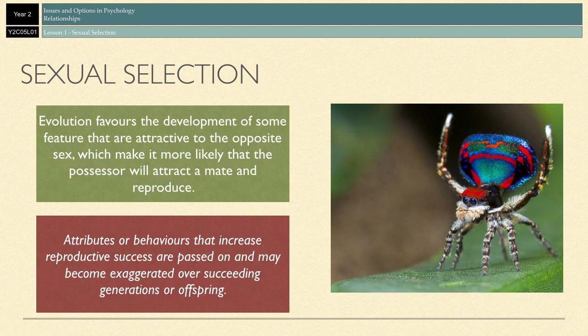As an example using humans — if height is deemed to be attractive in males, then over generations we will see an increase in particularly tall males, because tall males get the opportunity to reproduce by being deemed more attractive. If tall males are reproducing, they're passing on the genes that make them tall, and therefore succeeding generations will also be tall. That's sexual selection.